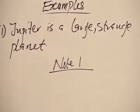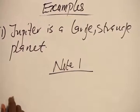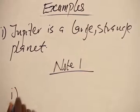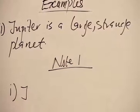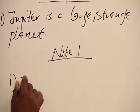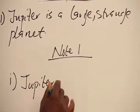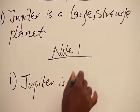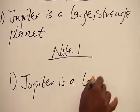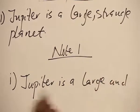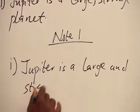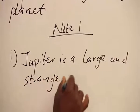we can also remove the comma and join them using AND. So, we can have, instead of Jupiter is a large, strange planet, we can have Jupiter is a large and strange planet.